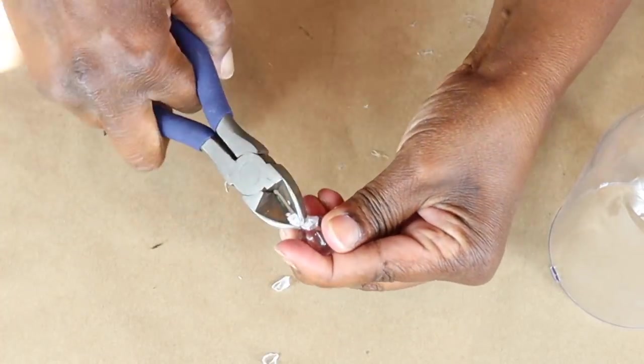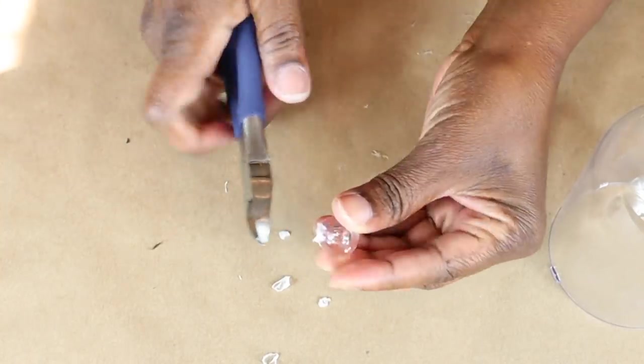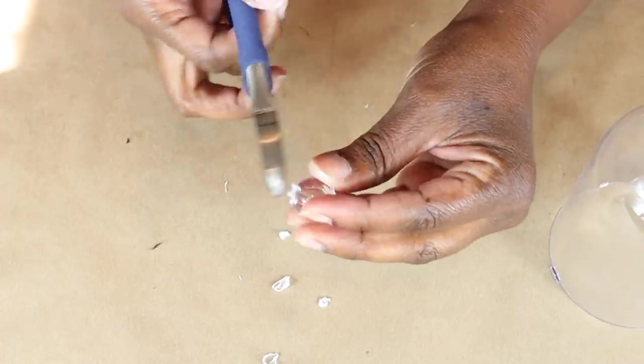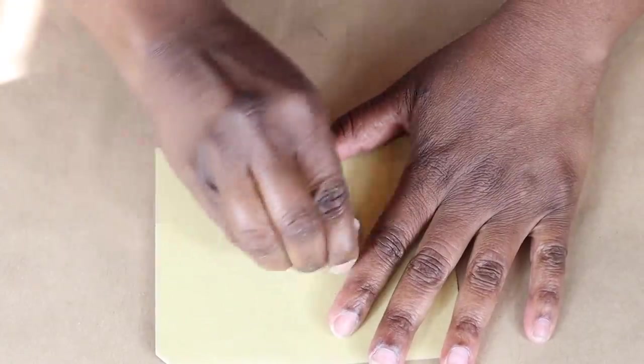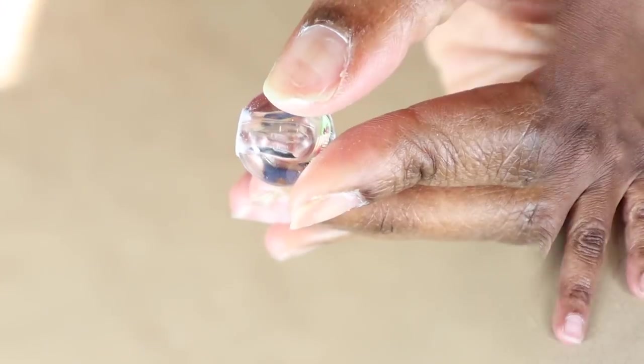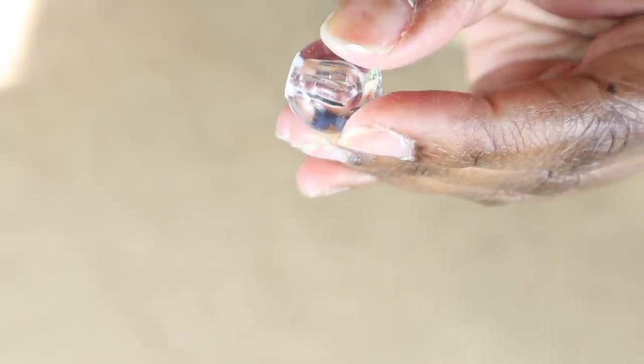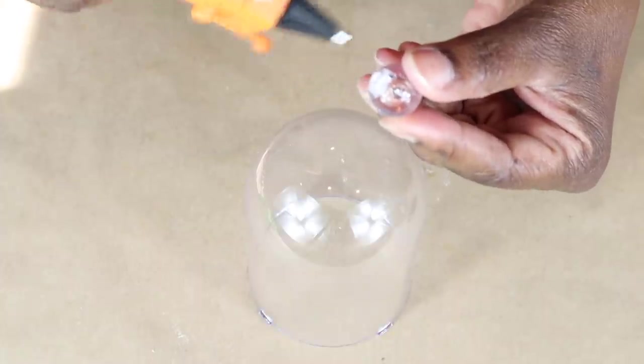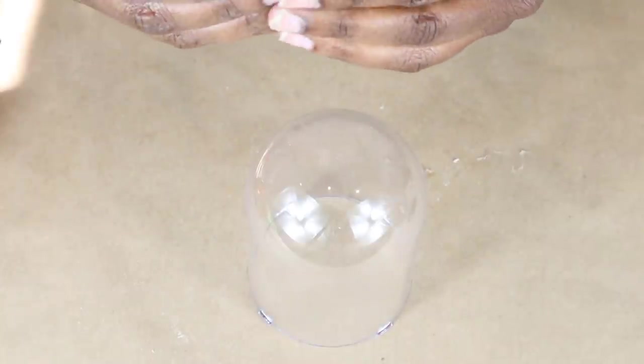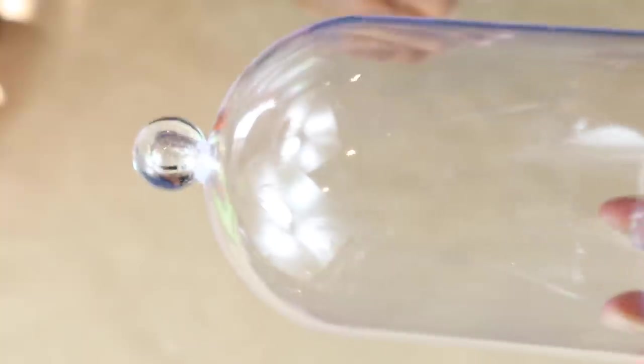And then I just used a pair of pliers to clip away the bottom. And I tried to get it as flat as possible. Then I rubbed it against some 100 grit sandpaper until it was smooth. And you can see the sandpaper did a great job. I just added some hot glue to it and placed it right in the center. And there is a little circle there. So you can see where to place it. And it looks like it came with the cloche.